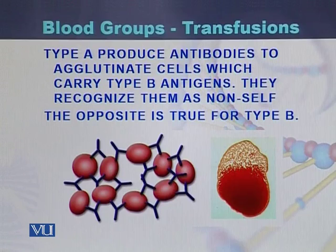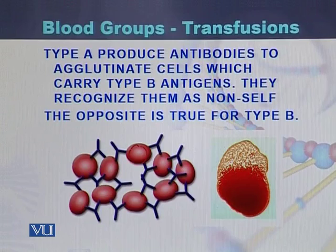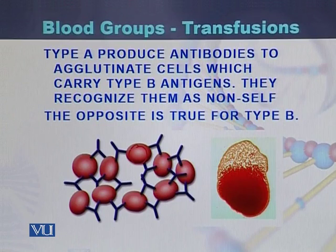In this diagram we can see the structures of red blood cells. The red blood cells contain antigens, and antibodies attach to these antigens. In the case of blood group type A, antibodies are produced to agglutinate cells which carry type B antigens, recognizing them as non-self.